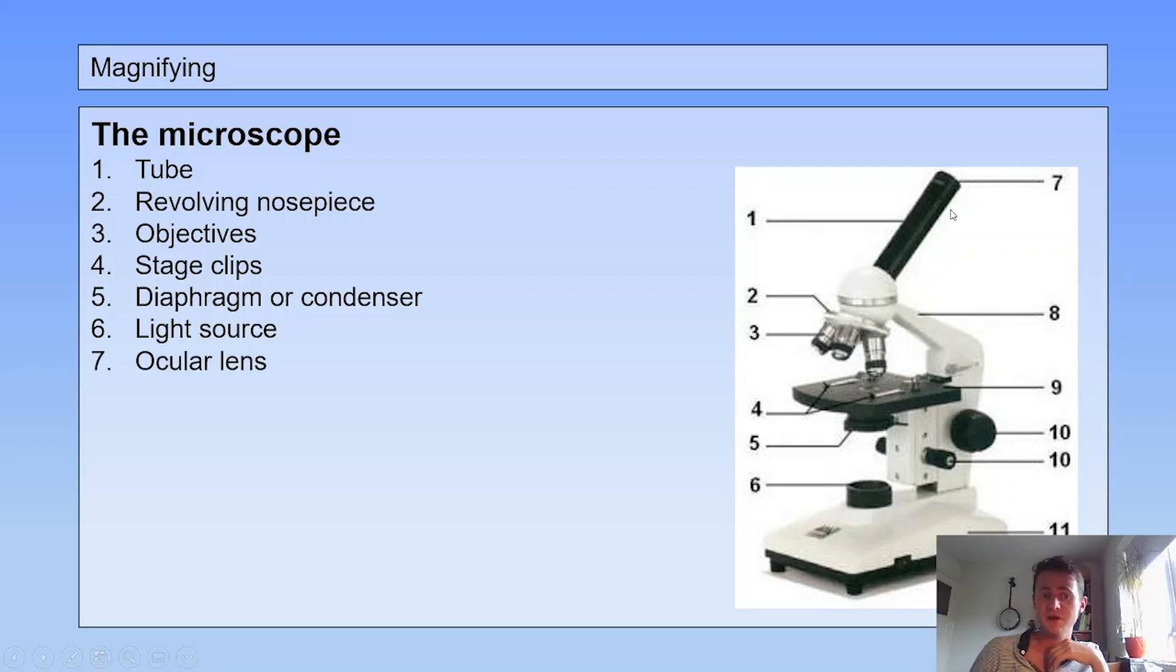Seven, the ocular lens, this is the place where you look through, and eight is the arm. Nine is the stage, so this whole part is the stage, and number ten is the coarse and fine adjustment knob, and sometimes they're integrated in one knob.